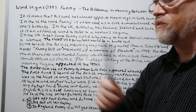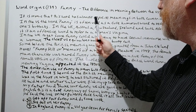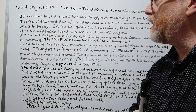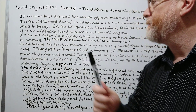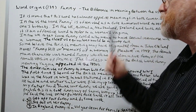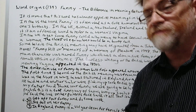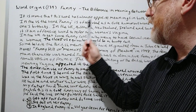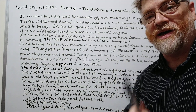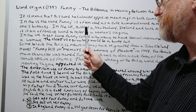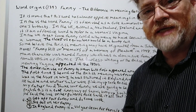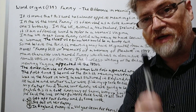It is ironic that this word almost has opposite meanings in both countries. In the U.S., the word 'fanny' is often used as a cute, humorous word to refer to one's buttocks or one's butt. In the UK, Australia, New Zealand, Ireland, and South Africa, it is an offensive term meaning a woman's vagina — her sexual area in the front.